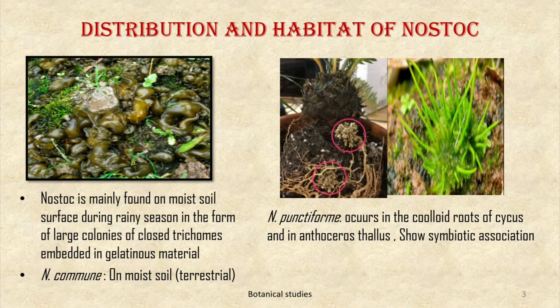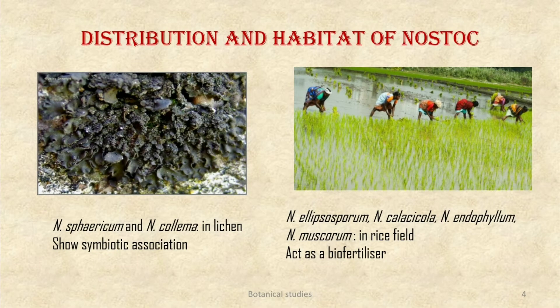Nostoc punctiforme occurs in coralloid roots of Cycas and in Anthoceros thallus, showing a symbiotic association between them. Cycas roots and Anthoceros thallus provide shelter to the algae and also protect Nostoc from desiccation.